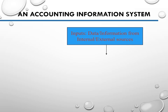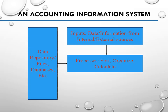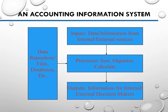Any accounting information system must have inputs — where the data comes from, whether from internal or external sources. Then the data is processed, meaning you sort, organize, and calculate that information. It can be stored in a data repository, database, or file, and after processing it becomes an output — information for decision makers, both internal and external.